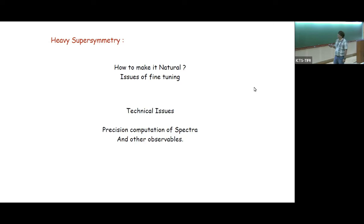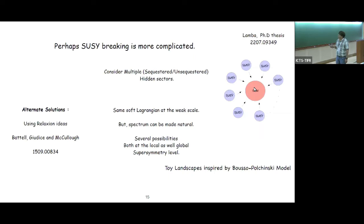If you have heavy supersymmetry, there are two main issues: how to make it natural. One is issues of fine-tuning, and then there are technical issues like precision computation of the spectra and other observables. If you have heavy supersymmetry, you can make it natural. Jan has looked into it using relaxation ideas essentially. One can also have something like multiple sequestered supersymmetry breaking sectors. This is some sort of a mini landscape essentially, inspired by landscape. Here you can really reduce the fine-tuning. You can in principle make the spectrum natural with factor 1 by n. With a large number of hidden sectors or sequestered sectors, you reduce them by 1 by n.